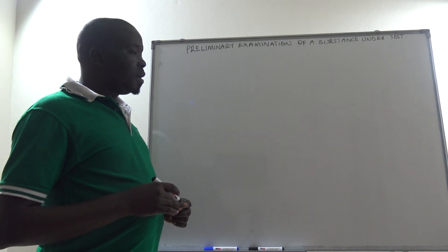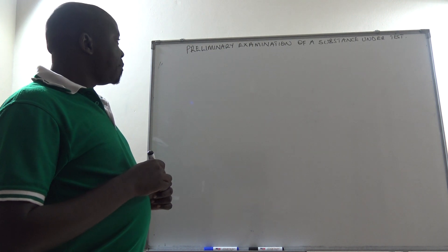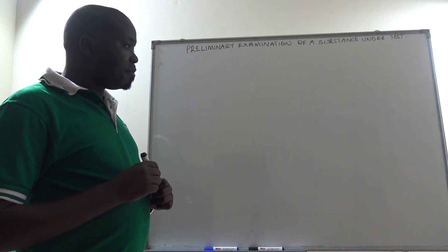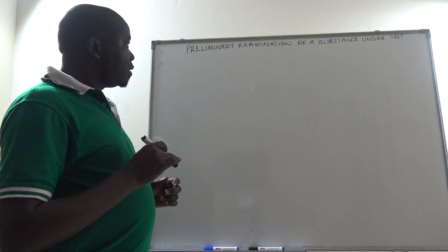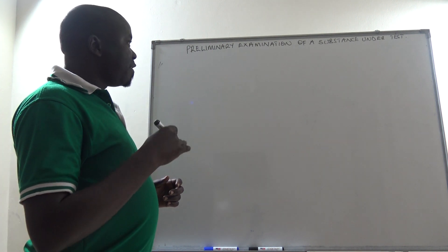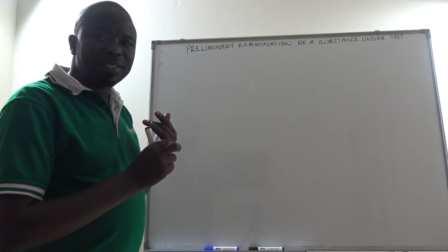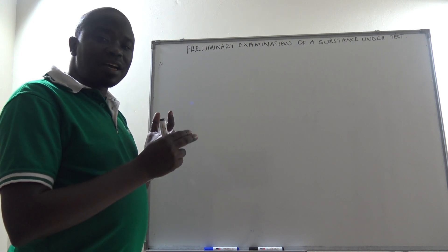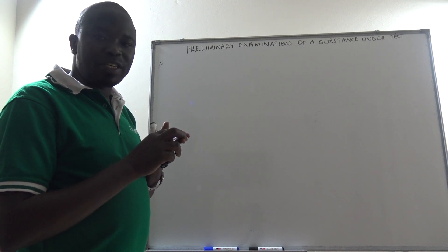TEPDocs Education. Let us continue with the preliminary examination of a substance under test. We saw four properties to take note of when given a substance under test: the color of the substance, the smell of the substance, the texture of the substance, and the deliquescent property of the substance.